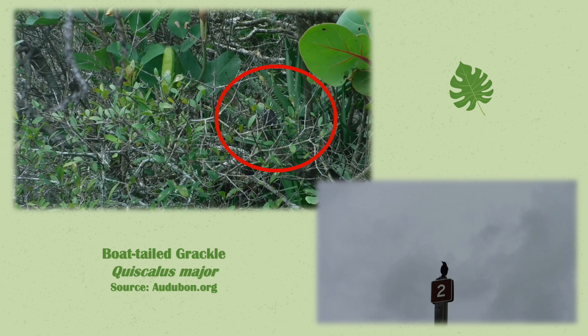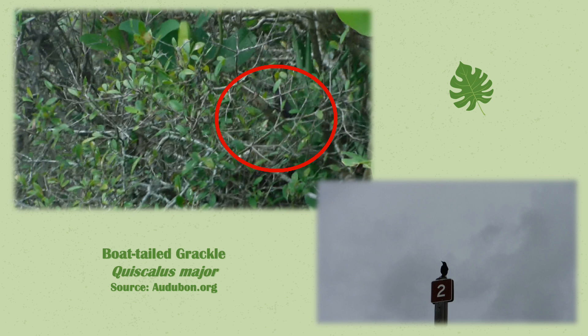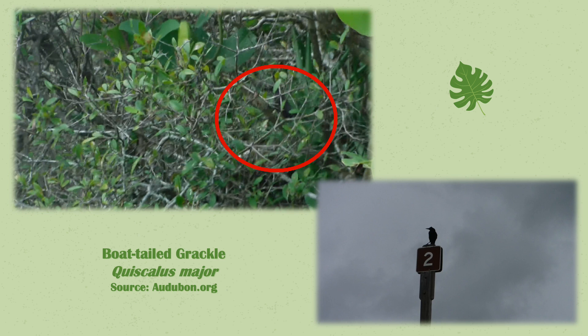This is the boat-tailed grackle, Quiscalus major. The first video is a little tough to see — he was really hiding in those bushes. I chose the boat-tailed grackle over the common grackle because while reading about the two species, the boat-tailed grackle was said to be more aquatic, and this bird was found near an aquatic location. These birds are also known for entering heron colonies to feed on their unguarded eggs.